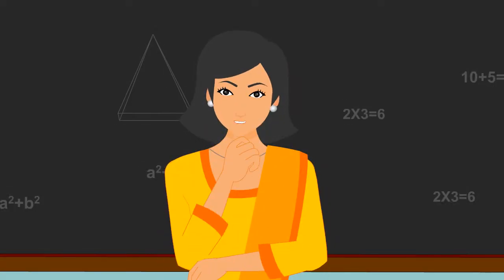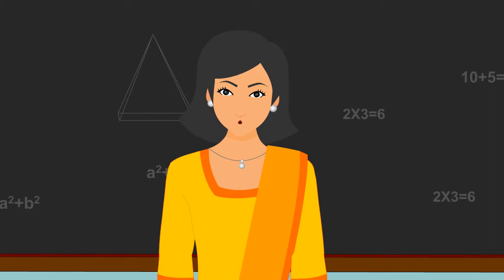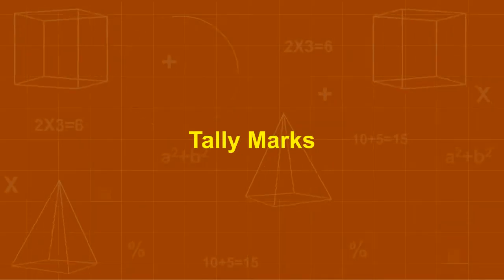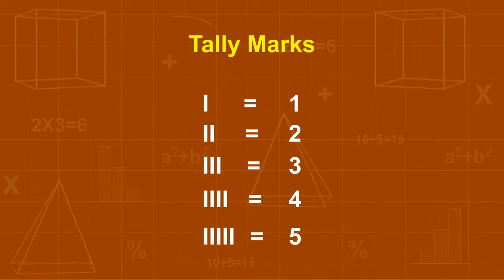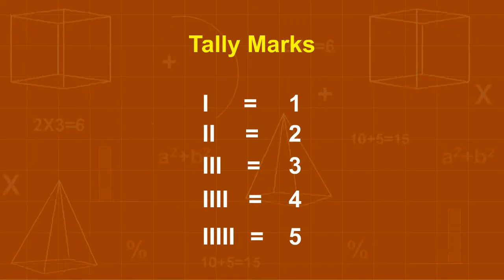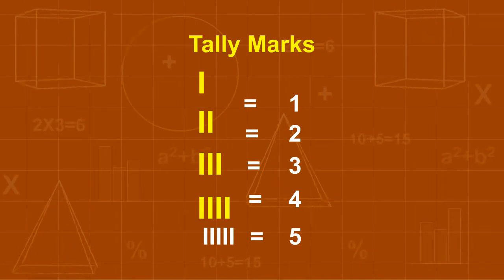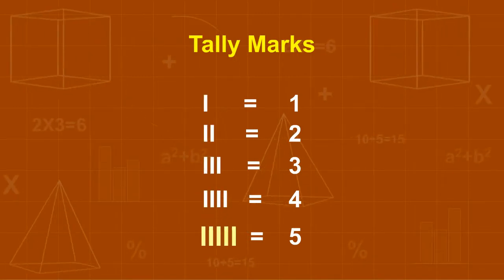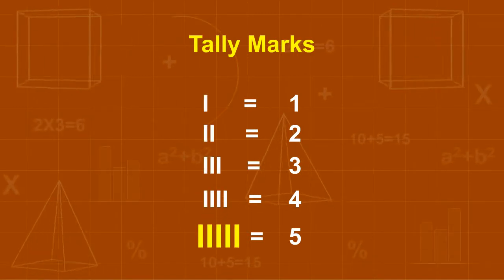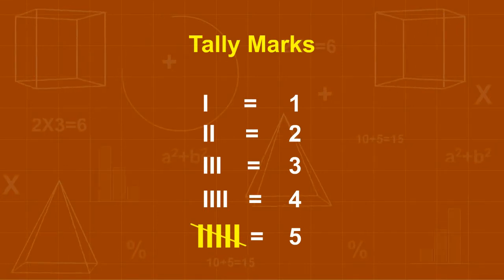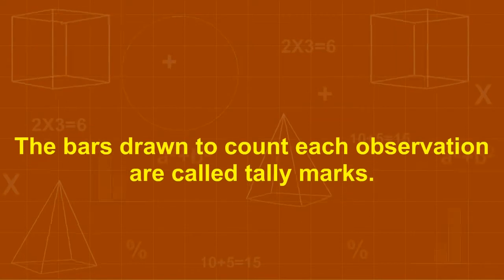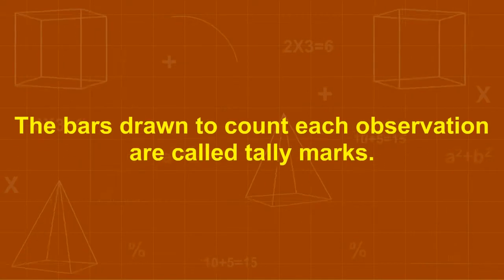On the basis of these terms, let's learn and study about tally marks. Tally marks are a quick way of keeping track of numbers in a group of five. One vertical line is made for each of the first four numbers. The fifth number is represented by a diagonal line across the previous four lines. The bars drawn to count each observation are called tally marks.